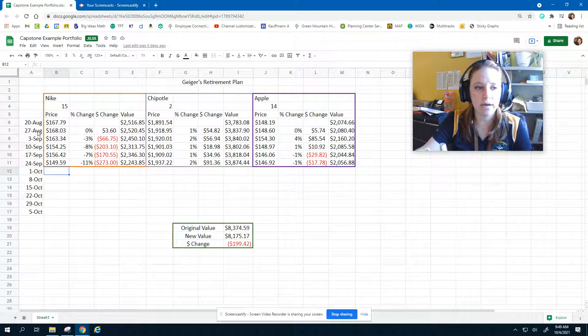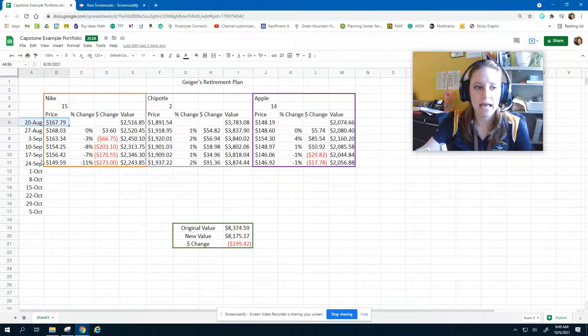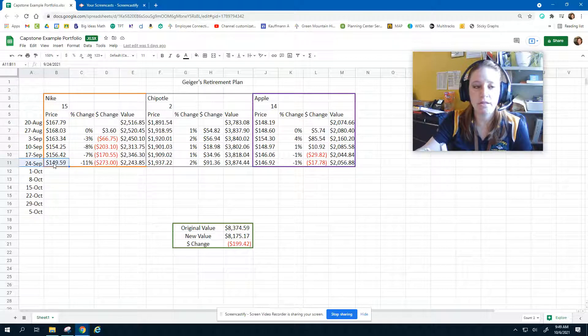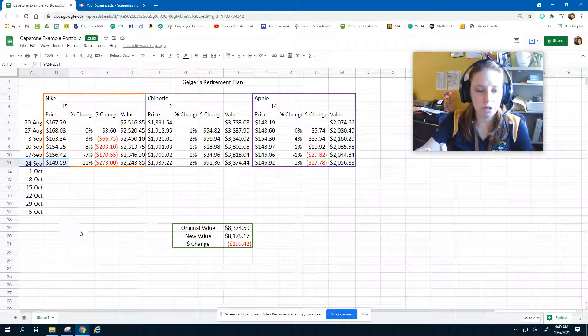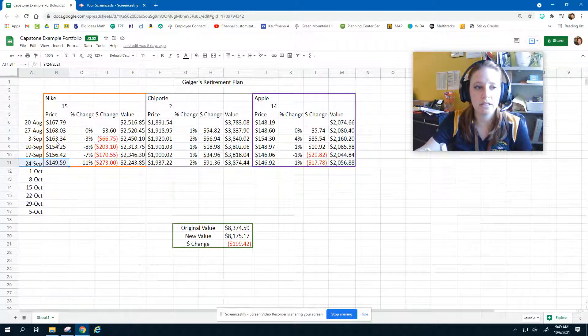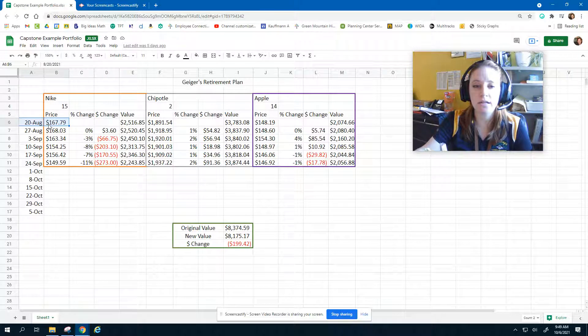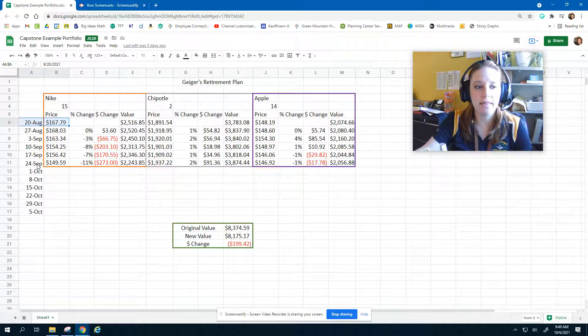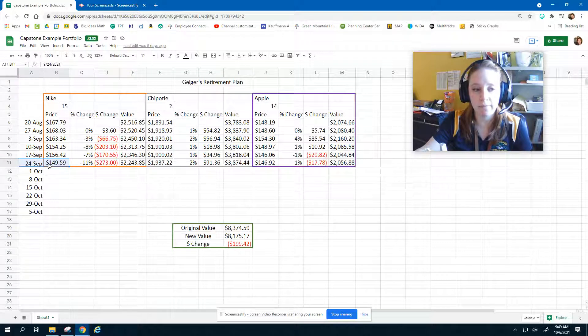The equation that we're going to write is we're going to use our starting value, which is August 20th, and our six-week mark, September 24th, to write our equation. We're going to turn those into coordinate points. August 20th is going to represent day 0. That's our starting value. September 24th is going to represent our six-week mark, and we're going to count by days.